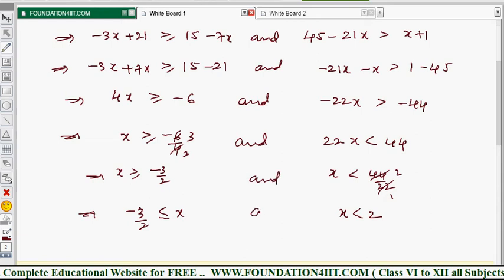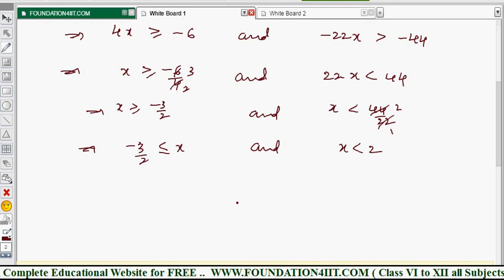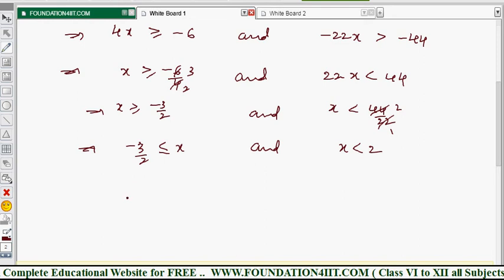These both are combined. Now these two together, the solution set is minus 3 by 2 less than or equals to x, and x is less than 2, where x belongs to real numbers. This is represented on the graph of the solution set.